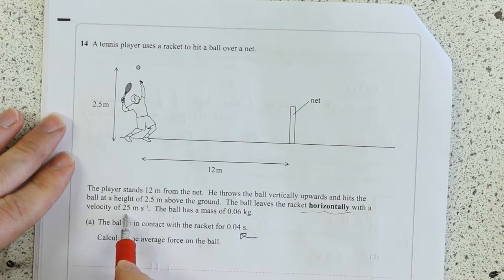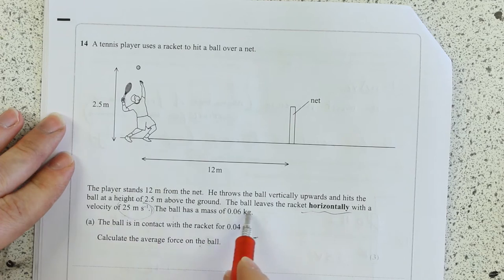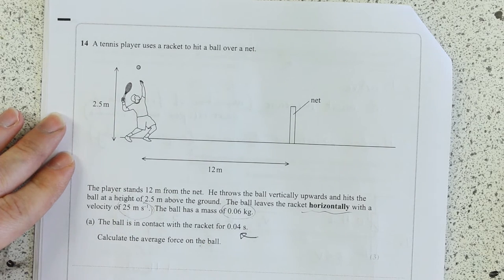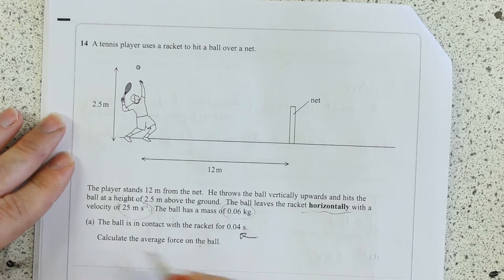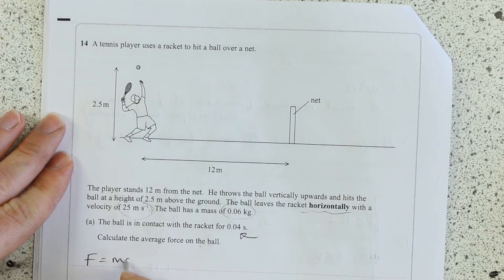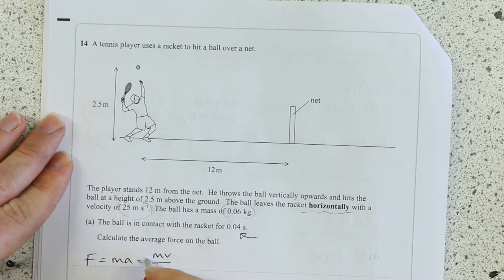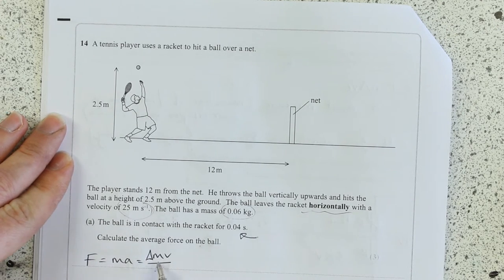The ball is in contact with the racket for average force on the ball. Right, okay, so I know its velocity is this, and I know its mass is this. I can do this in two ways, both of which are using Newton's second law. I can either use F equals ma or F equals mv over t. I should maybe put delta mv - change in momentum over time.